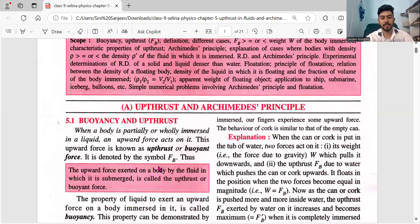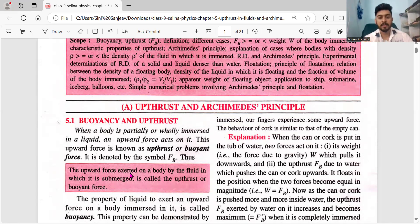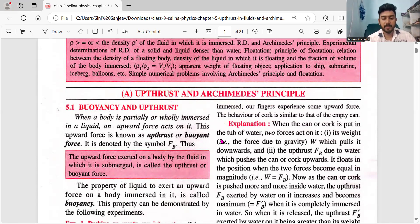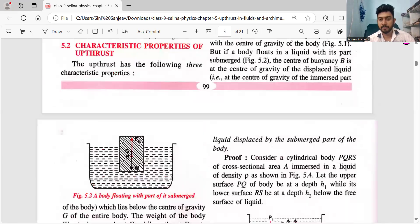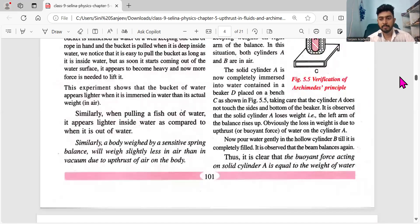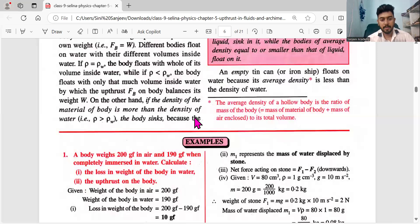So coming to what is Uptrust - the upward force exerted on a body by the fluid in which it is submerged is called the Uptrust or buoyant force. Suppose if you are falling into a swimming pool or any water body like a lake, the water will push us up. That is basically my Uptrust. Based on this concept in Archimedes' principle, we'll be trying to do some problems that will be asked for the examination.